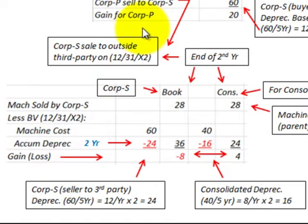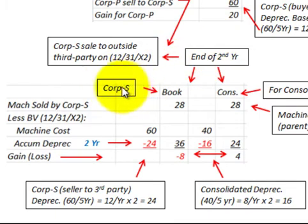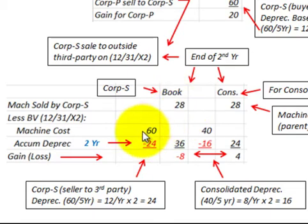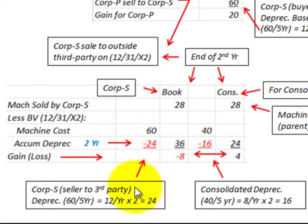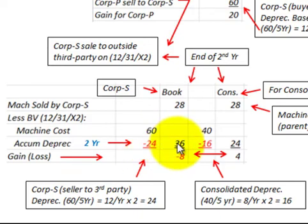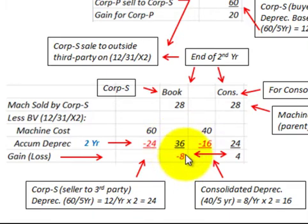To determine the gain or loss on the sale of the machine to the outside third party: Corporation S sold the machine on 12-31-X2 for $28,000. They carried the machine at a cost of $60,000 with accumulated depreciation of $24,000 for two years (at $12,000 per year), giving a book value of $36,000. Comparing $28,000 received to their book value of $36,000 gives Corporation S a loss of $8,000.